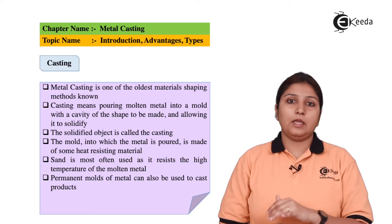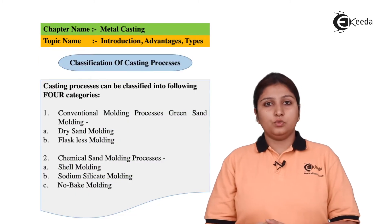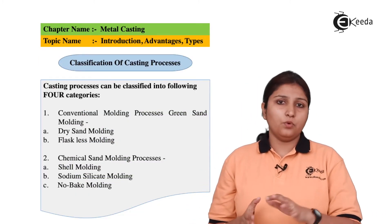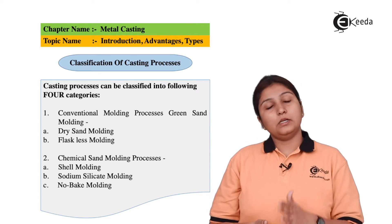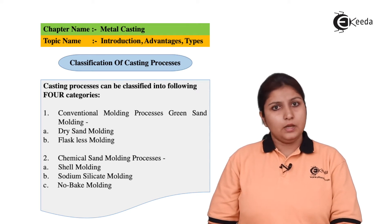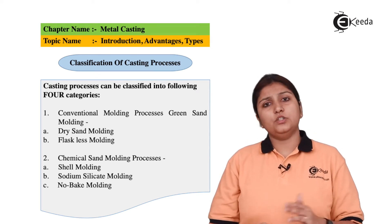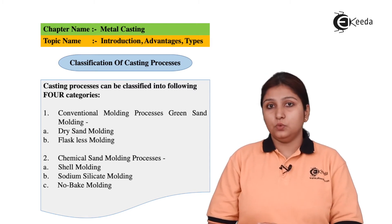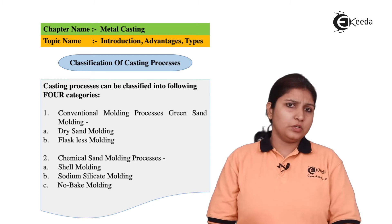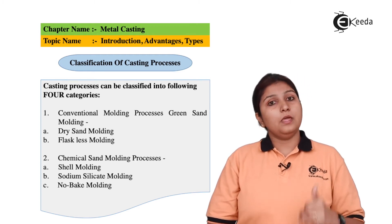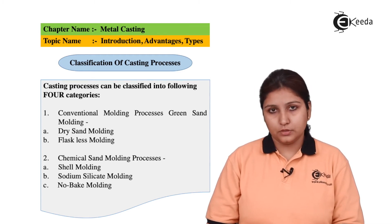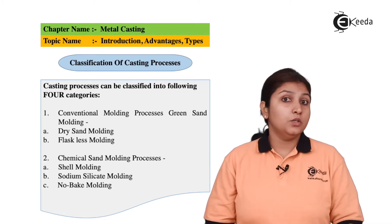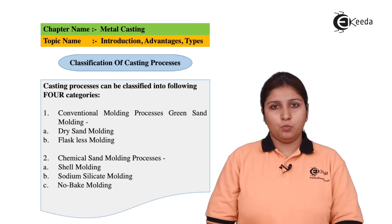Even permanent molds can also be made by this process. Casting process can be divided into four basic categories. Number one is conventional casting process — the basic casting process in which dry sand molding can be done and a flask can be used. Then we come to the chemical casting process, in which chemical molds are used, consisting of sodium silicate molding or shell molding.